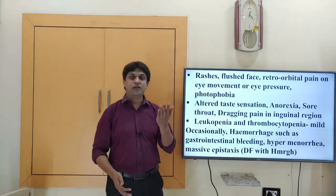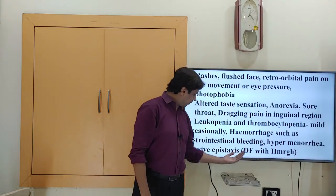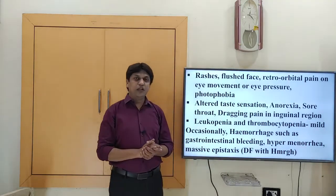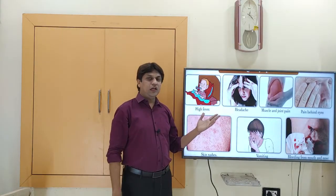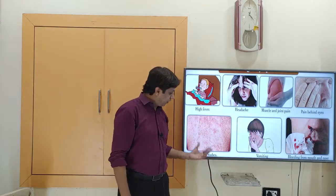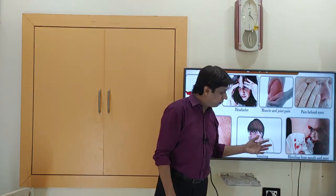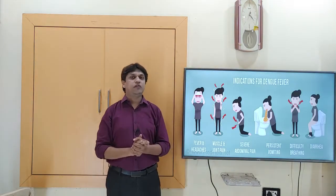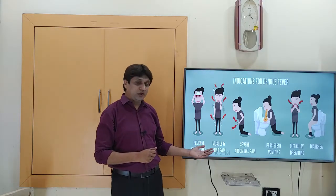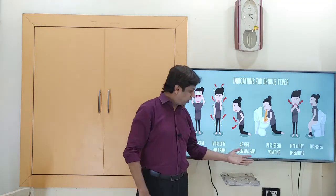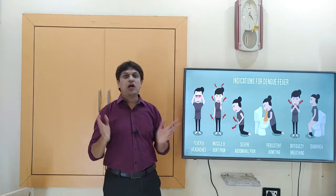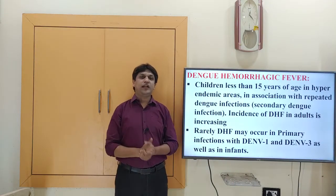Typically, there is thrombocytopenia — decreased platelet count — and occasionally hemorrhage such as gastrointestinal bleeding, hypermenorrhea, or massive epistaxis, which is bleeding from the nose. The clinical manifestations include high fever, headache, muscle or joint pain, pain behind the eyes, skin maculopapular rashes, and sometimes vomiting or bleeding in later stages due to thrombocytopenia. Additional features can include severe abdominal pain, persistent vomiting, difficulty breathing, or diarrhea.